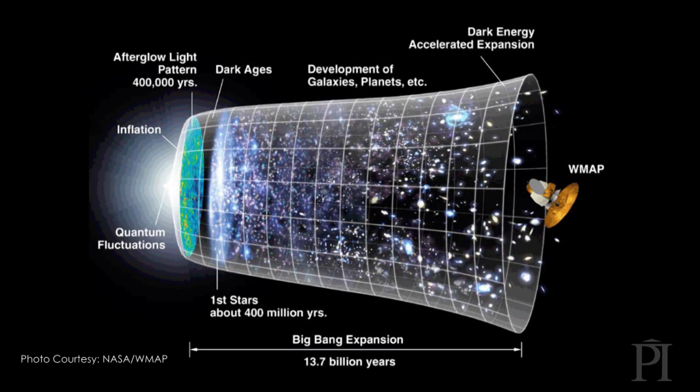As cosmology has progressed, we've been able to understand earlier and earlier epochs in the universe's evolution. Historically, it's been sort of a process of peeling away layers of an onion. Every generation of physicists solve some old puzzles and find some new ones.